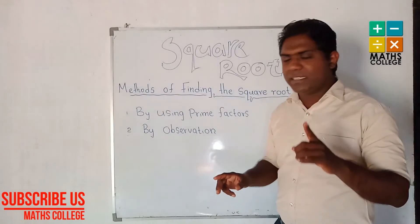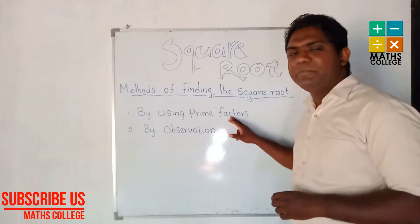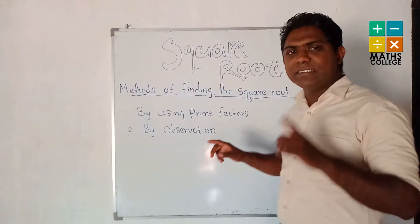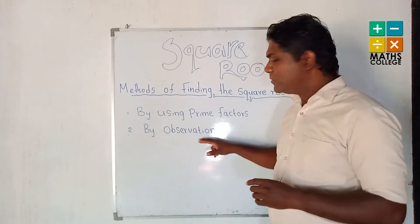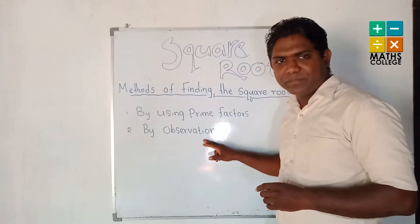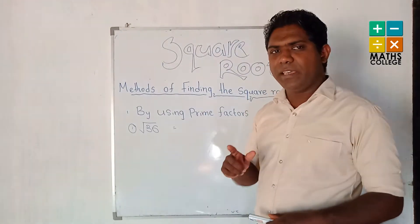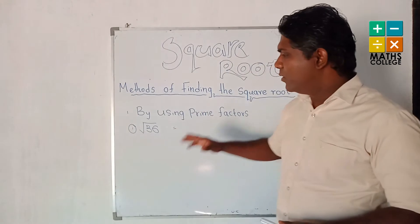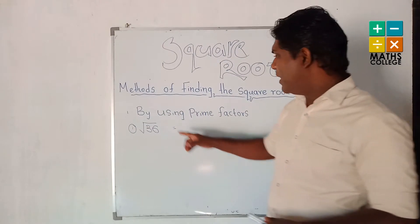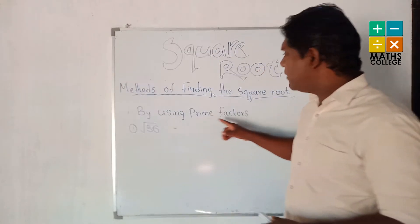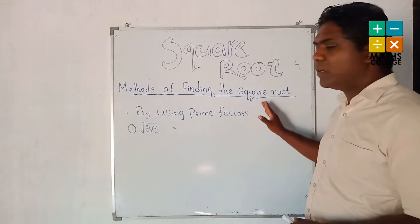The first method is by using prime factors and the second method is by observation. We are going to start with using prime factors to find the square root.